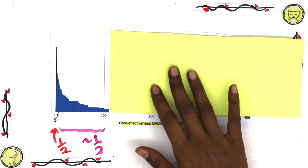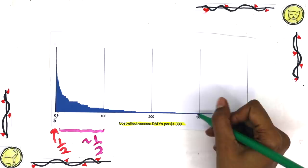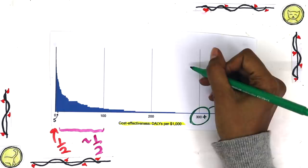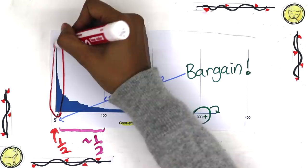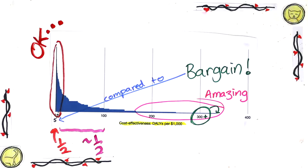But amazingly, there are five interventions out of the 108 that do even better. The best one saved 300 years for every $1,000 spent. A massive bargain compared to the median of just five years. The majority of these interventions work just okay, but some of these interventions work amazingly well. So doesn't it make sense to find these and fund them?